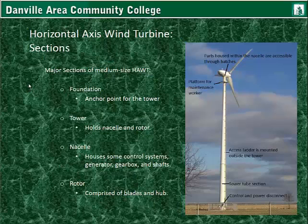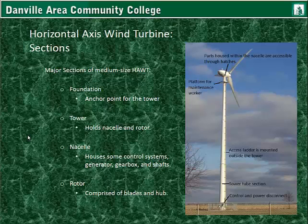Major sections of a medium size horizontal axis wind turbine include the foundation, which may have reinforced concrete with bolt anchors protruding so the tower bolts to it. The nacelle houses some control systems for larger types, the generator, gearbox, shafts, and other components. The rotor includes blades and hub. It may have a simple electronic or hydraulic system to adjust the blades, or it may use passive mechanical control.